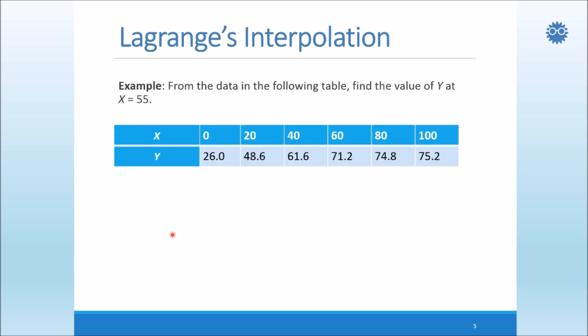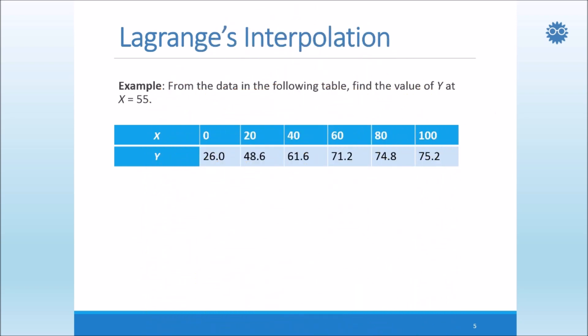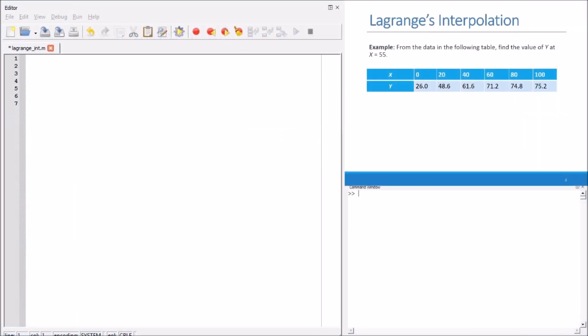Now let's solve this example. We have this data pairs, and we need to get the value of y at x equals 55. So it is some value between 40 and 60 here. So we will interpolate the value here. Now we want to create a program of MATLAB Octave. So by using the Octave Editor I have here, we will start coding step by step.